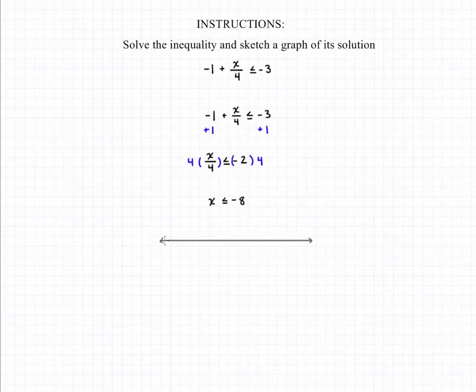The first is: do we want to include the point negative 8? And the second is: what direction are we going to draw our arrow in? Because X can be less than or equal to negative 8, we do want to include that point.